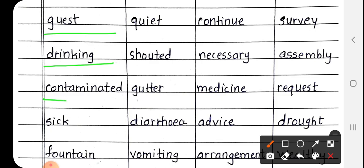Next is Contaminated, C-O-N-T-A-M-I-N-A-T-E-D. Contaminated means dushit, jo kharab hota hai, usse kehte hai contaminated.